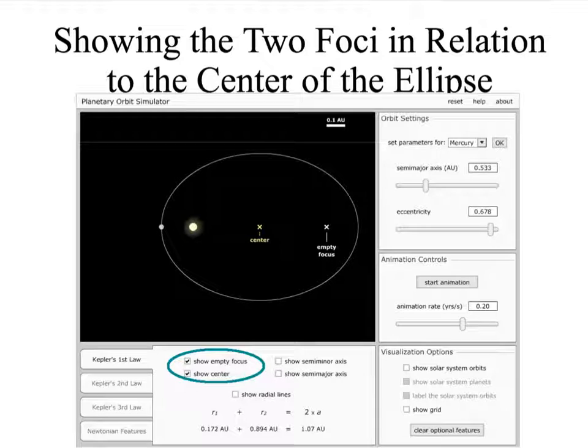Now here we see we've activated a couple of the parameters in the center panel and that is to show the empty focus. Now we know from Kepler's first law that the orbit follows in an elliptical path with the Sun at one of the two foci. The other of the two foci is out in empty space somewhere and we know that they'll be related to the center, have to be equal distances from the center.